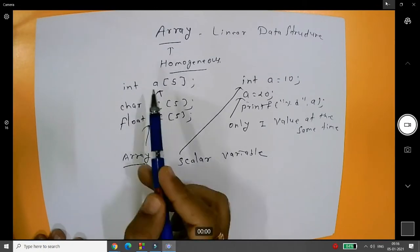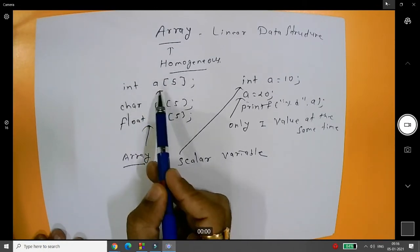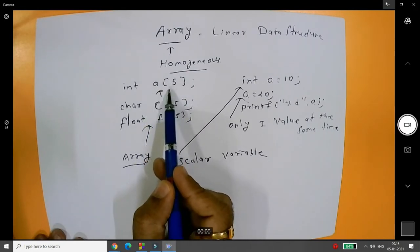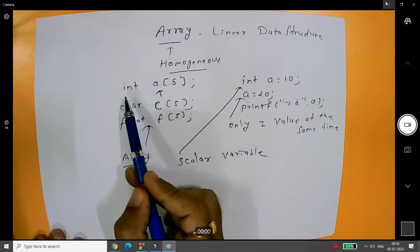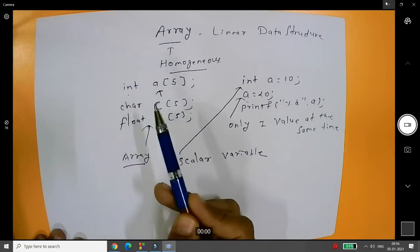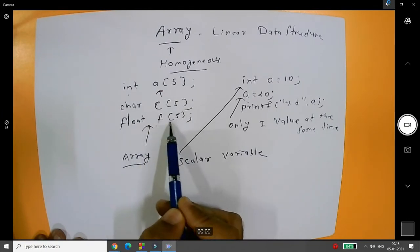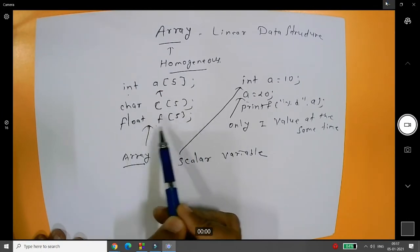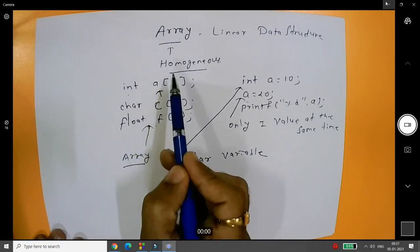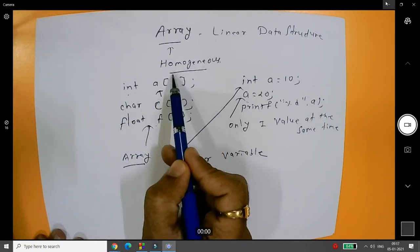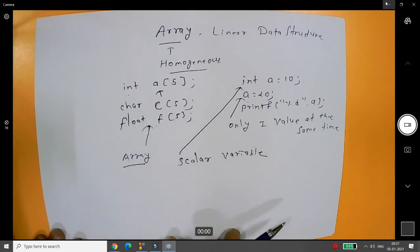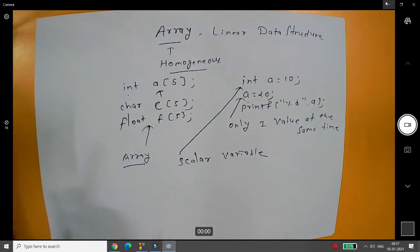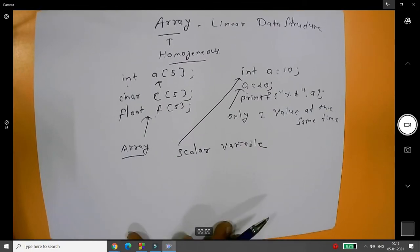Array is a linear data structure — a collection of multiple values but with the same data type. If you write integer a of 5, you can store 5 integer values. If you want to store floating-point values, you write float f of 5 — you can store only floating-point values. This means it is a homogeneous data structure: a collection that can store data of the same type only.